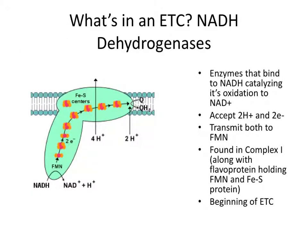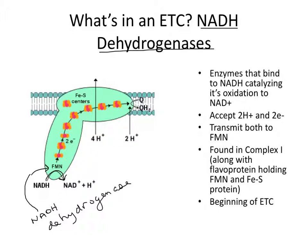Let's go through what's actually in an electron transport chain. This is a cartoon of Complex 1, found in most microbial and non-microbial electron transport chains. A very important part of Complex 1 is the enzyme NADH dehydrogenase. NADH dehydrogenase enzymes bind to NADH, catalyzing their oxidation to NAD+. Inside this large protein complex is the NADH dehydrogenase, which binds NADH and catalyzes its oxidation to NAD+ and a proton.